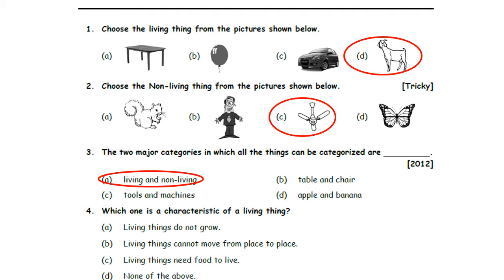Fourth one: which one is a characteristic of a living thing? Option A: Living things do not grow. Option B: Living things cannot move from place to place. Option C: Living things need food to live. Option D: None of the above. Living things can grow, so Option A is wrong. Living things can move from place to place, so Option B is also wrong. Living things need food, air, and water to live. So, Option C is the correct answer.